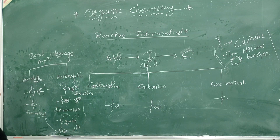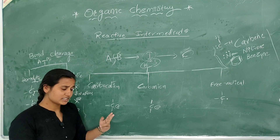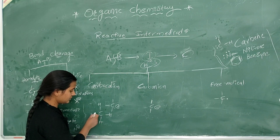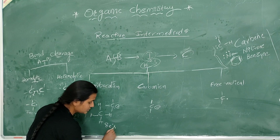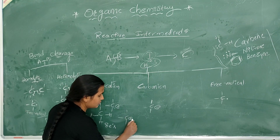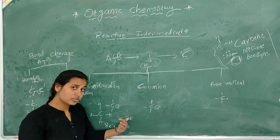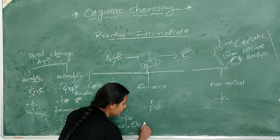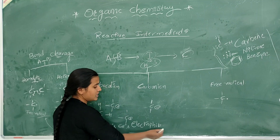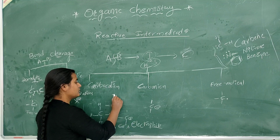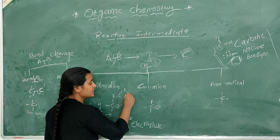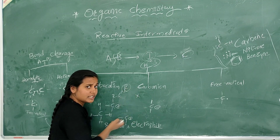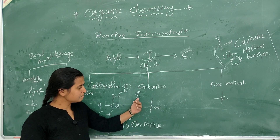Now, carbocation: carbon normally has eight electrons — for example methane has 8 electrons — but the carbocation carbon has only six electrons, so it is unstable and electron deficient. An electron-deficient species is called an electrophile — electron loving — meaning it wants to react and attract electrons. Carbocation is one of the intermediates. To stabilize it, a nucleophile — which carries electron density — can be used to supply electrons to the carbocation.